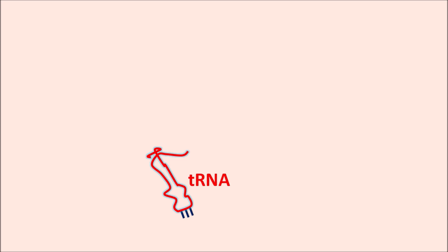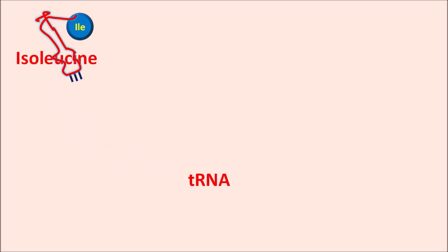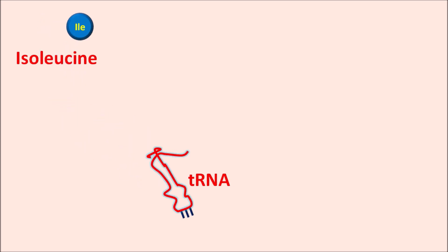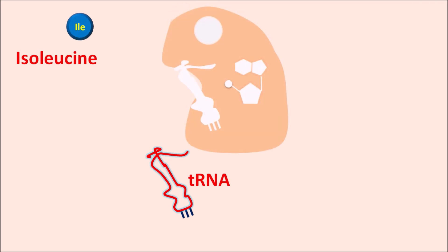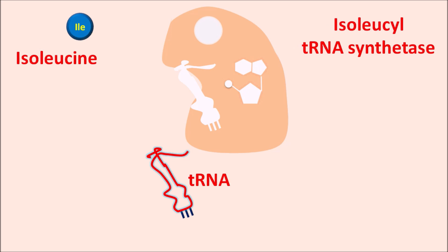Mupirocin mainly inhibits bacterial protein synthesis. For bacterial protein synthesis, one important component is tRNA (transfer RNA), which brings each amino acid so that the amino acid chain can grow to produce a specific bacterial protein. The important amino acid targeted by mupirocin is isoleucine. tRNA cannot bind to isoleucine directly — it requires the enzyme isoleucyl-tRNA synthetase, which has different pockets where all components bind. Energy in the form of ATP is also required.